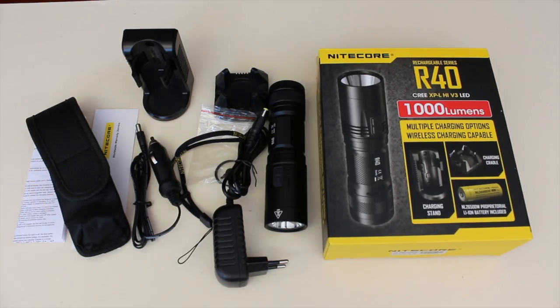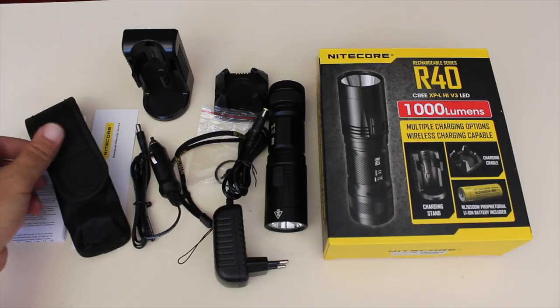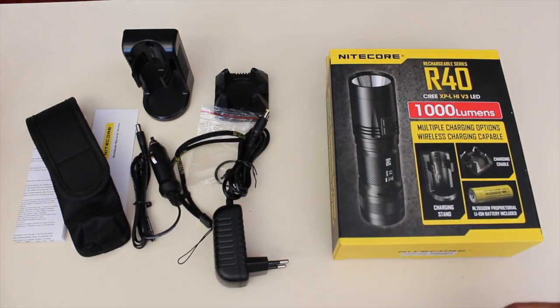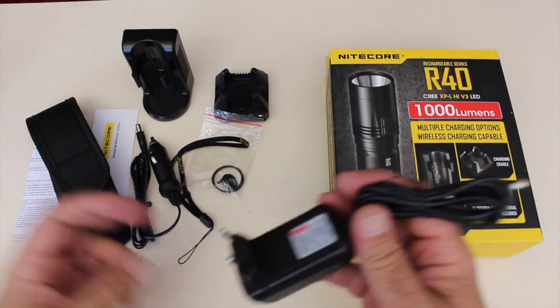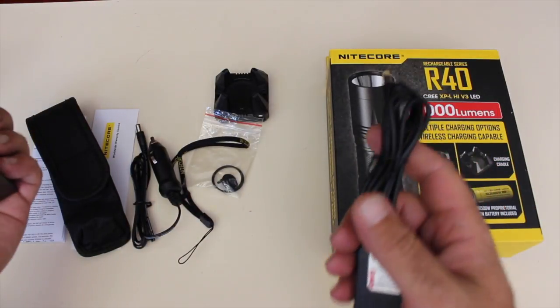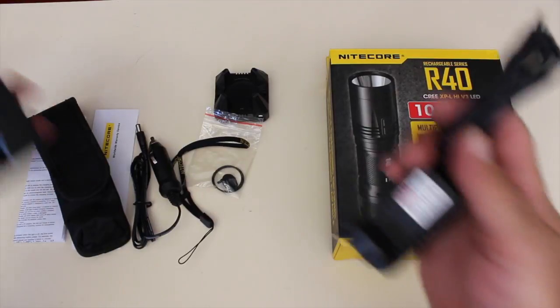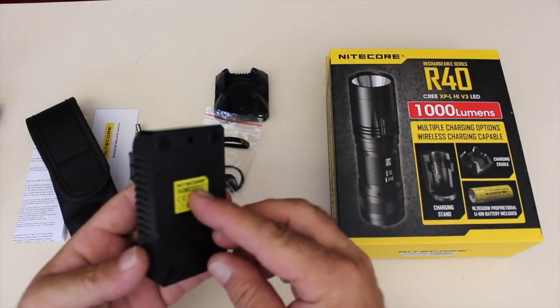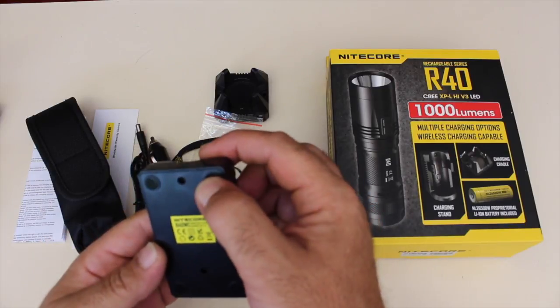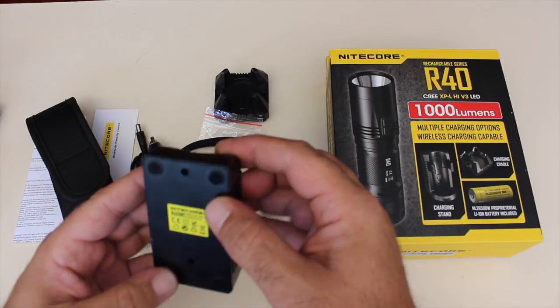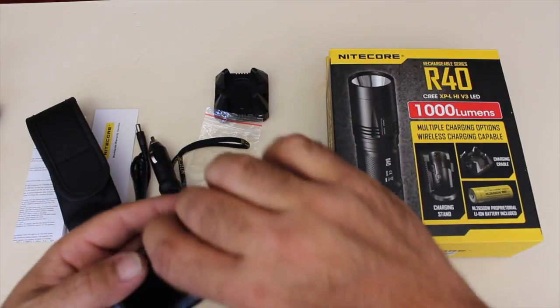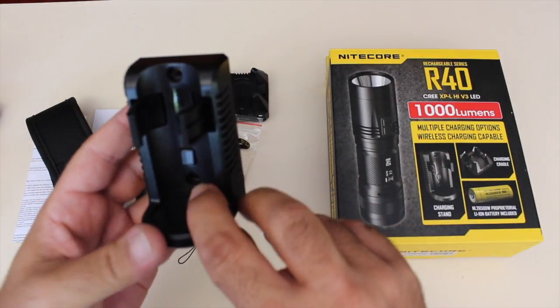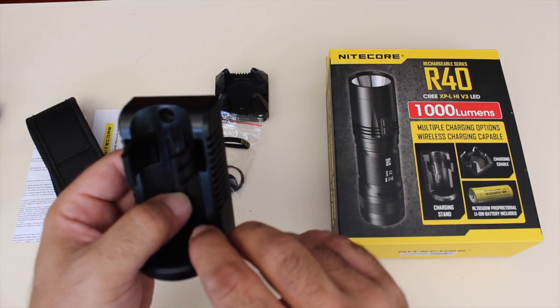Included in the box we have the R40 flashlight, your AC adapter for your wall mount cradle or desktop cradle, your wall mount cradle with rubber feet for non-slip, and it has a switch that activates as soon as you put the flashlight into the cradle to start charging.